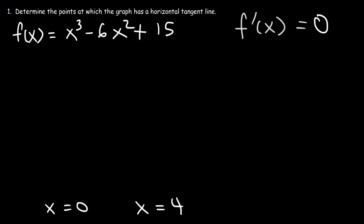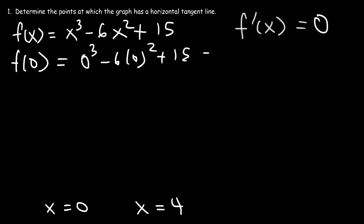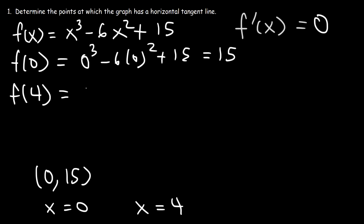Sometimes you need to write your answer as an ordered pair, so let's calculate the y-values. Evaluating f of 0: 0 cubed minus 6 times 0 squared plus 15 equals 15. So the first ordered pair is (0, 15). Now let's replace x with 4 for the second point.